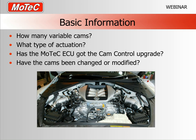Some basic information to start - this is more or less the conversation we'd have over the phone if someone rang up starting to get their CAM control system running. I'll need to know how many variable cams, or if you can tell me what engine you have. What type of actuation - generally speaking the variable cams we mostly deal with are an oil solenoid, where the engine's pressurized oil supply is used to move the cams. 90% of variable cams you'll deal with will be a shuttle-type oil control valve. For more information, download the 'What is CAM Control' webinar from our website.